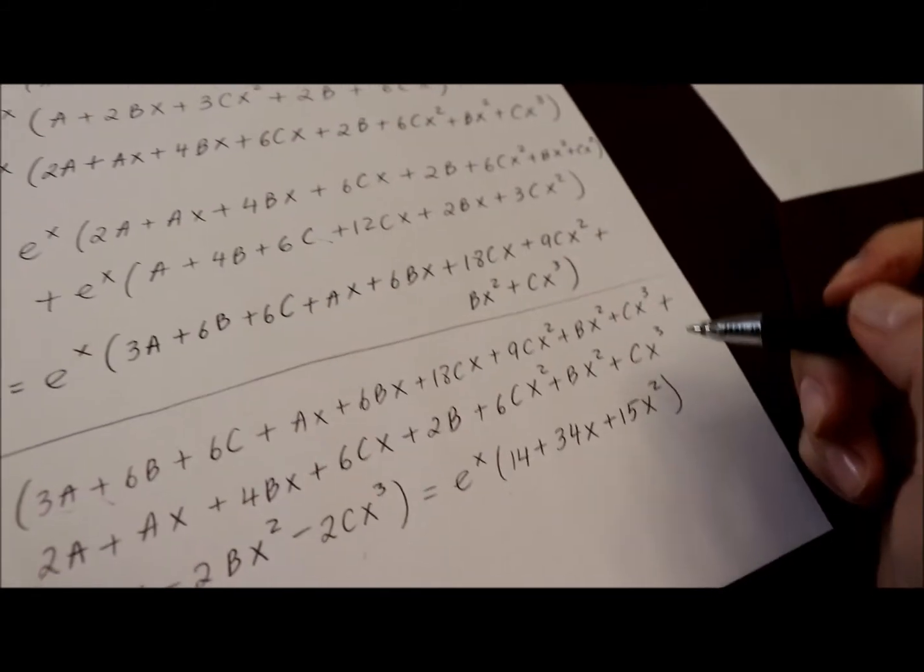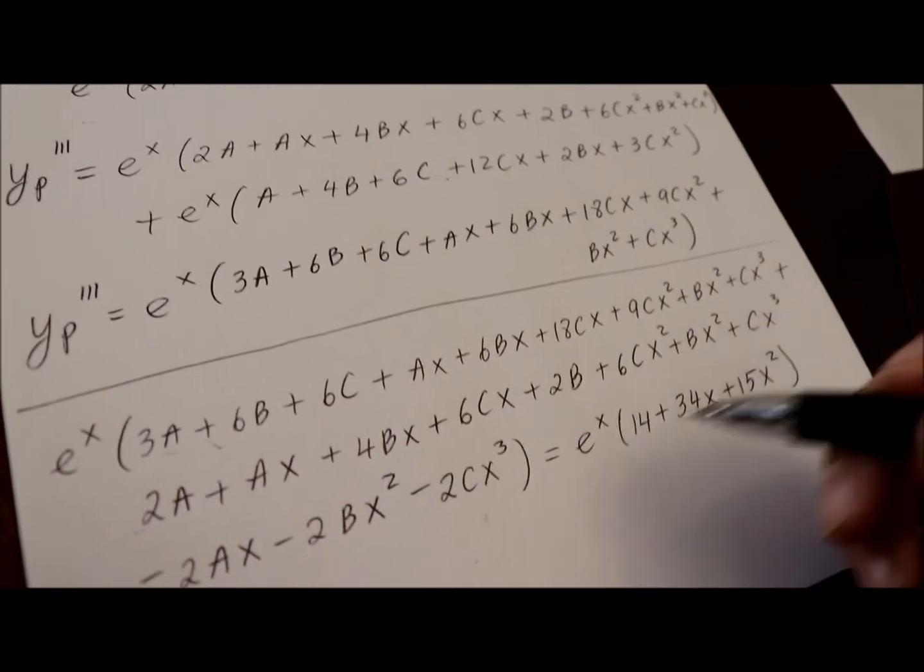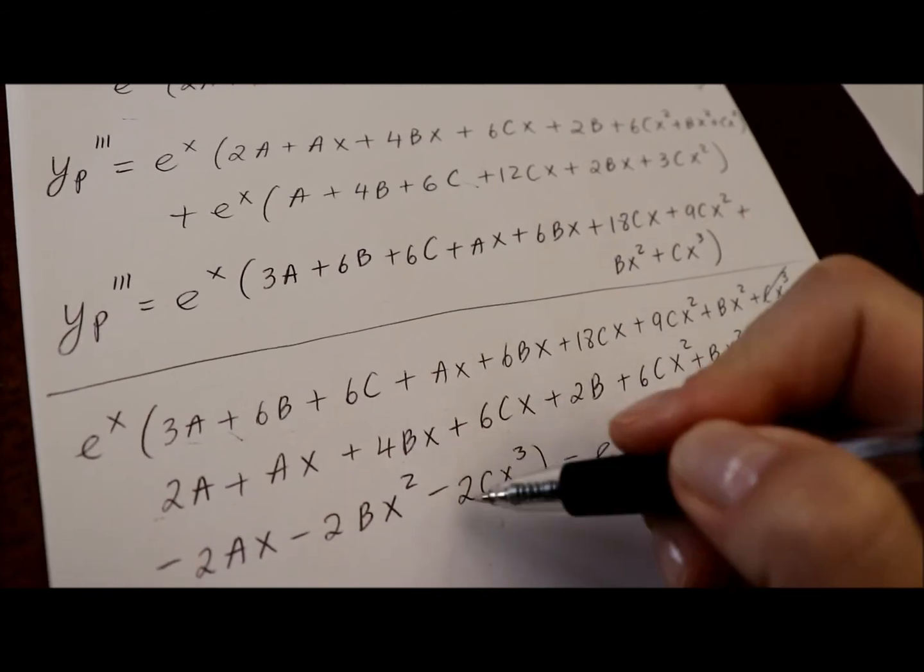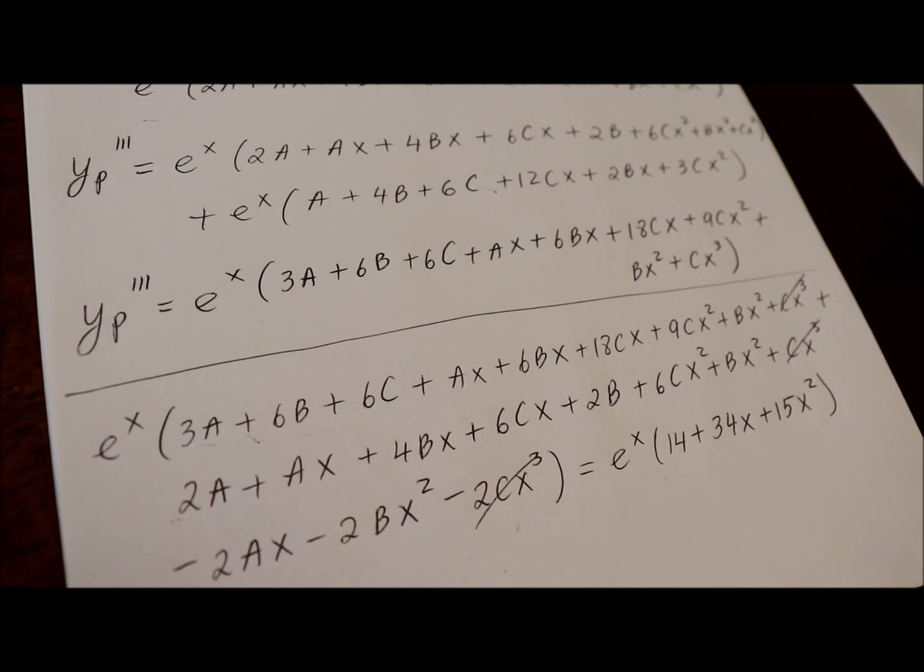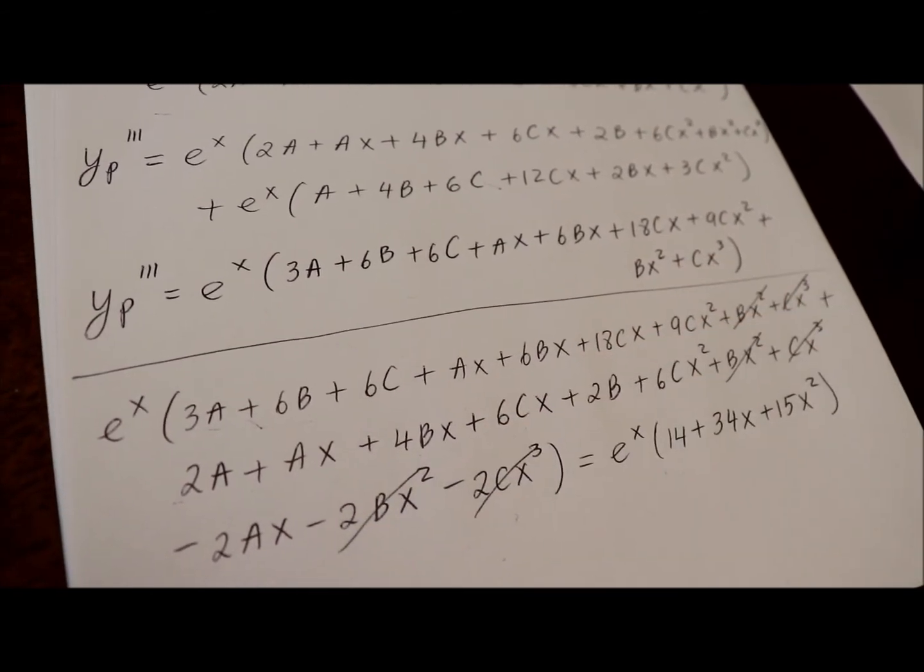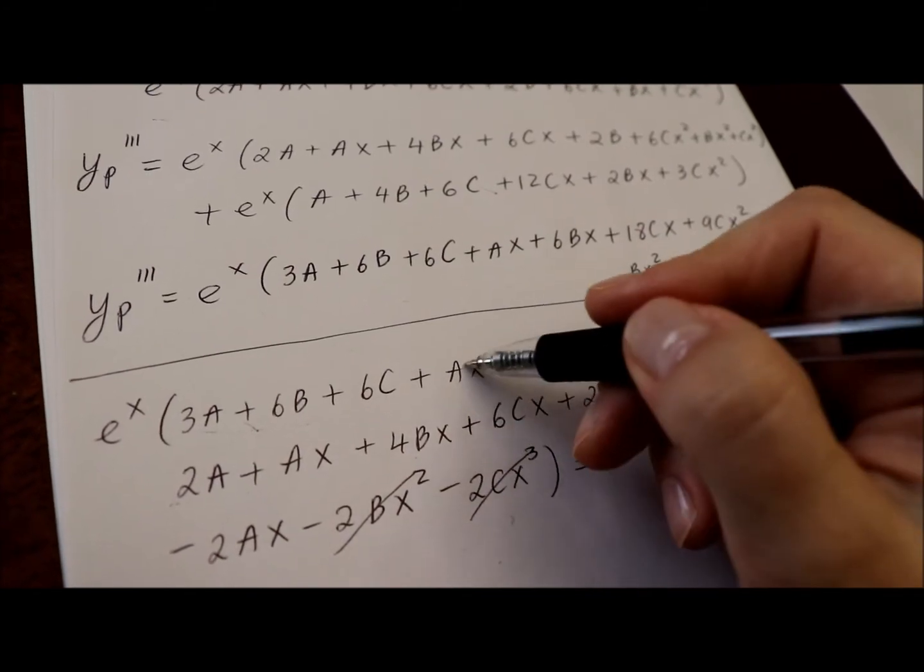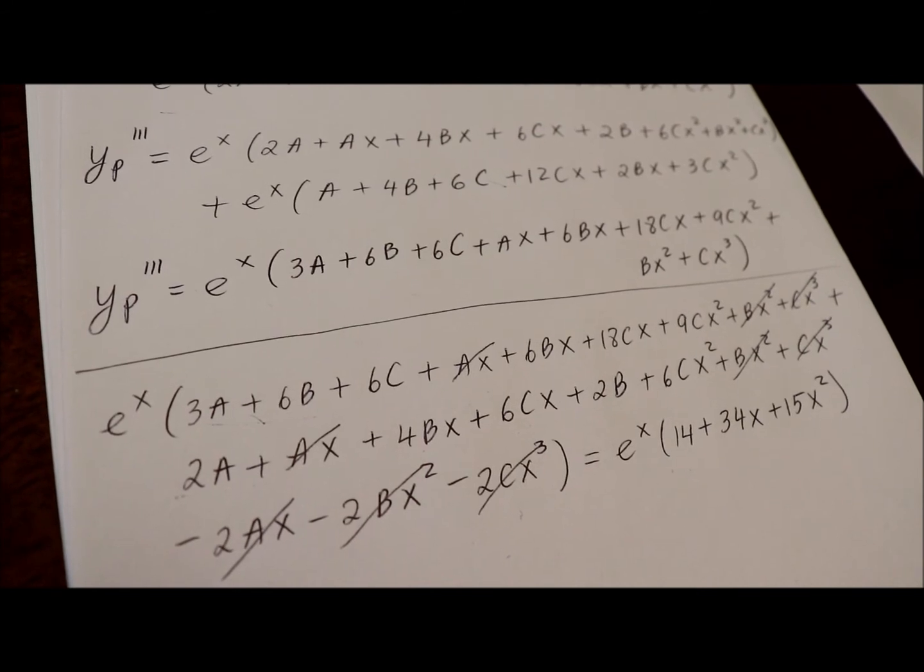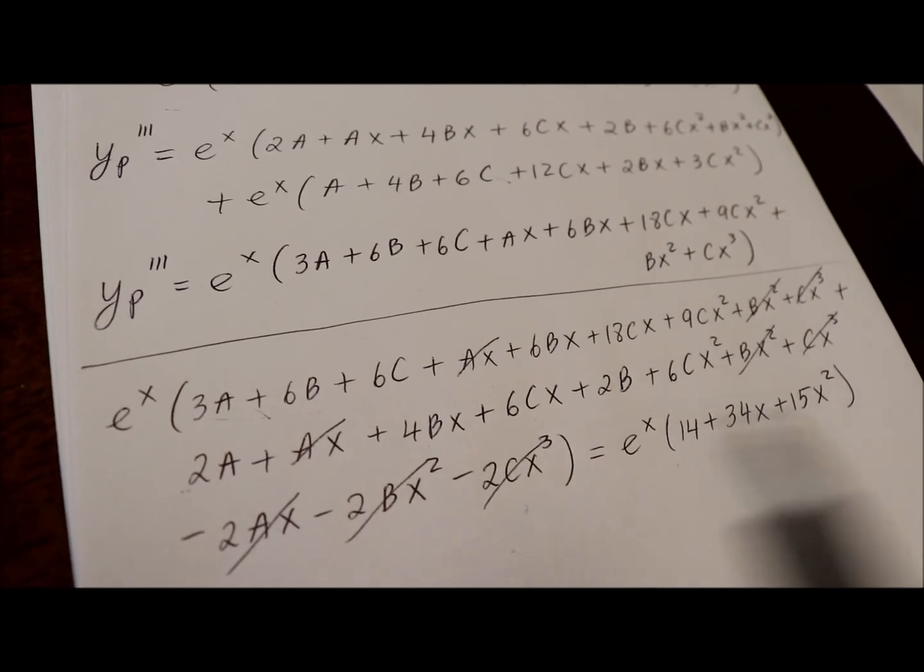go ahead and cancel out some like terms and let's see what's left. So, we have c x cube, c x cube, negative 2 c x cube, cancel out. b x squared, b x squared, negative 2 b x squared, cancels out. a x, a x, 2 a x, cancels out. And let's take a look at what we have here.